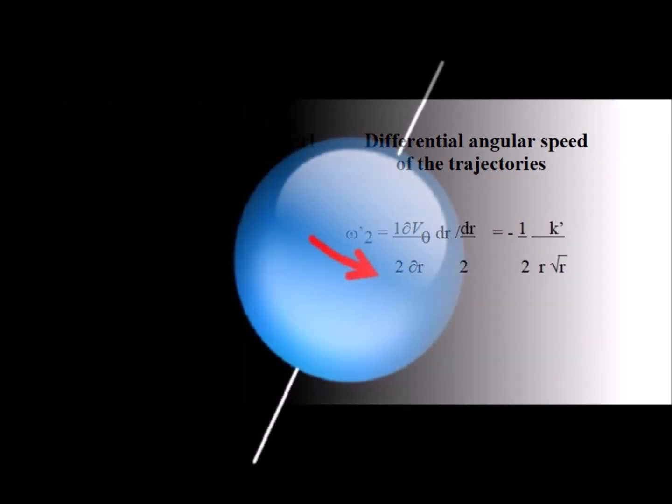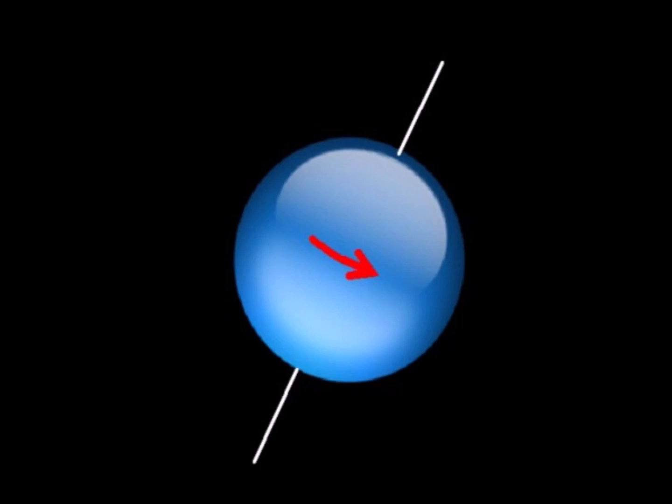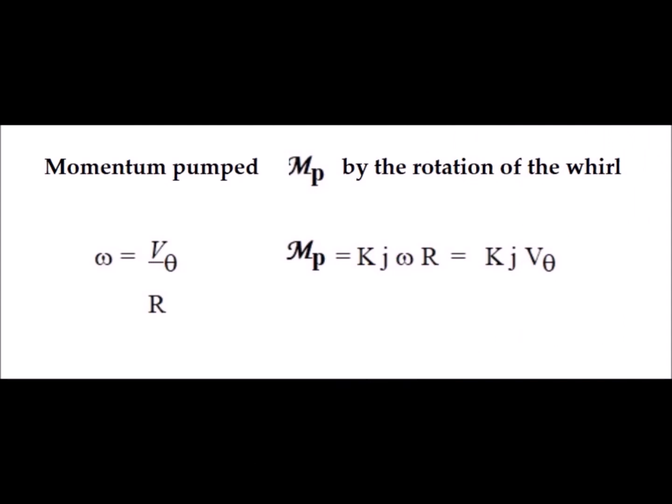It can only come from the angular kinetic energy of the fluid particles. The rotation of the whirl absorbs part of the angular kinetic energy of the fluid particles. The momentum pumped by the rotation of the whirl is proportional to the angular velocity, the distance from the center of the well and the distance traveled by the particles of the angular momentum fluid.